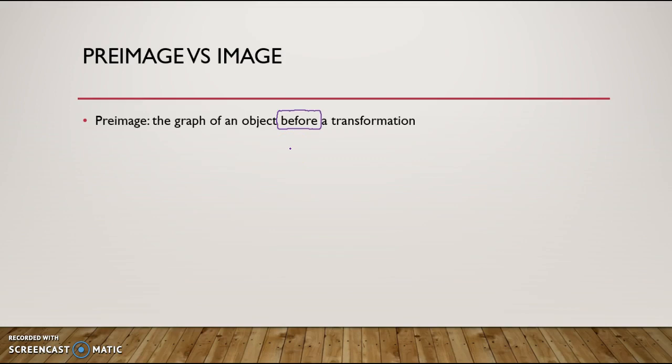What happens after? So you apply a transformation, then you have an image. The image is a graph of an object after a transformation.